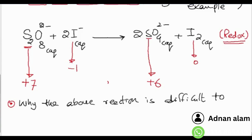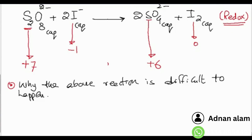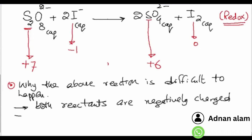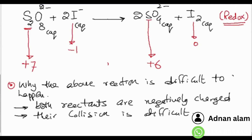Because both reactants are negatively charged ions, their collision is difficult — they repel each other. So the reaction will be slow. To increase the rate of reaction, we add a catalyst. The collision of reactant ions is difficult because both are negatively charged.